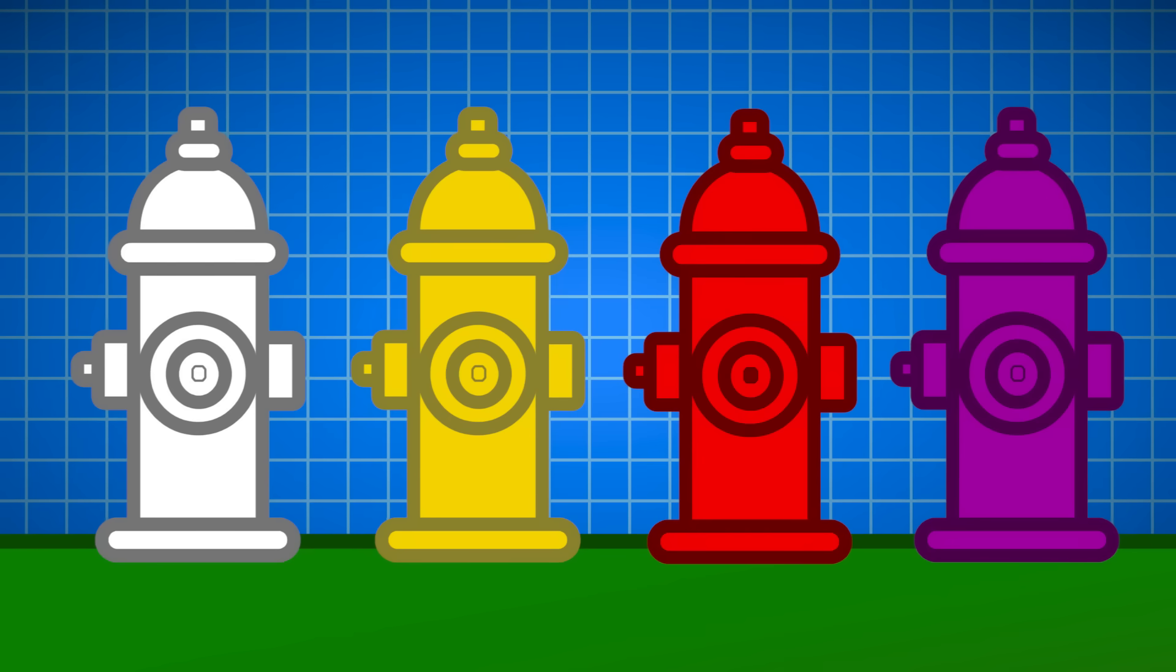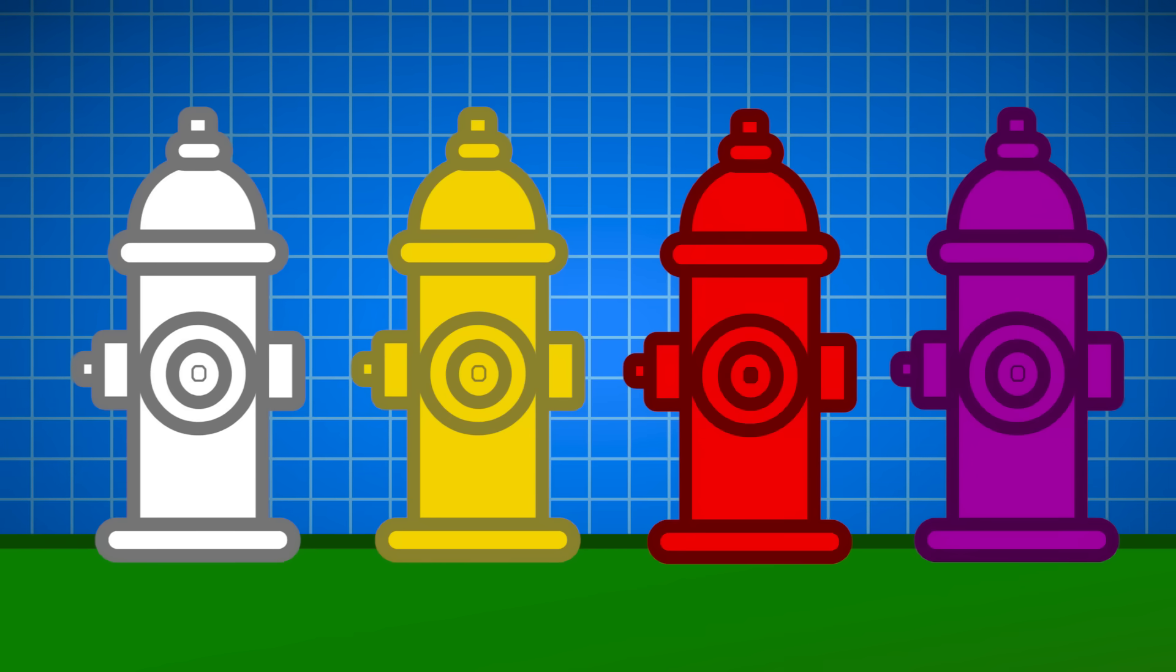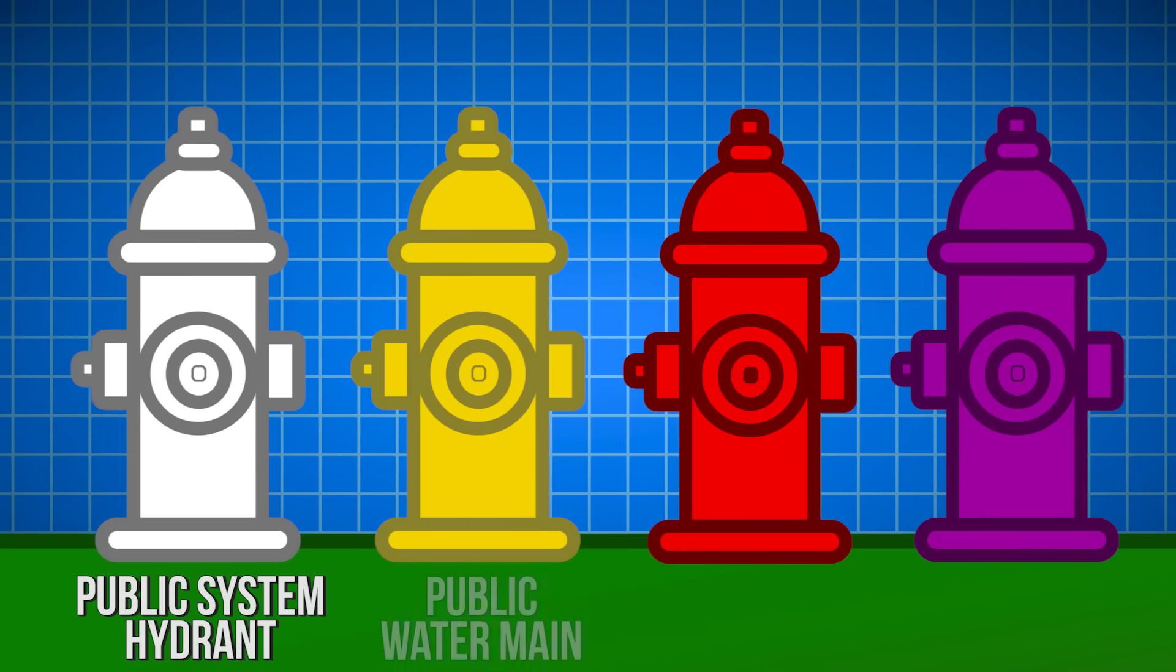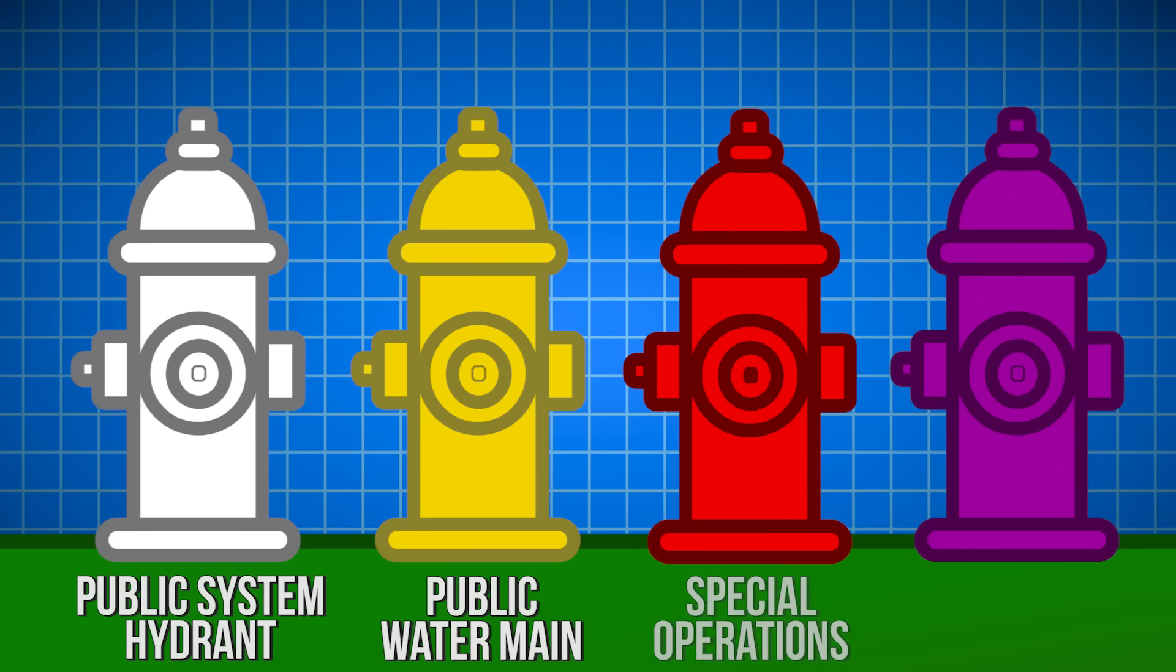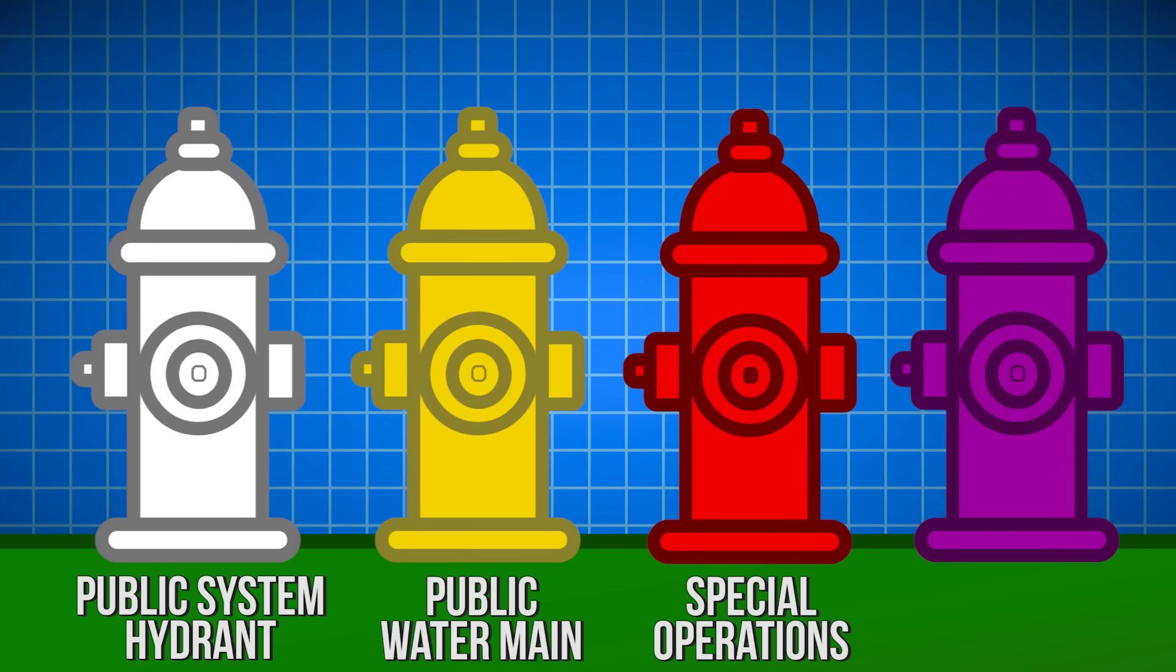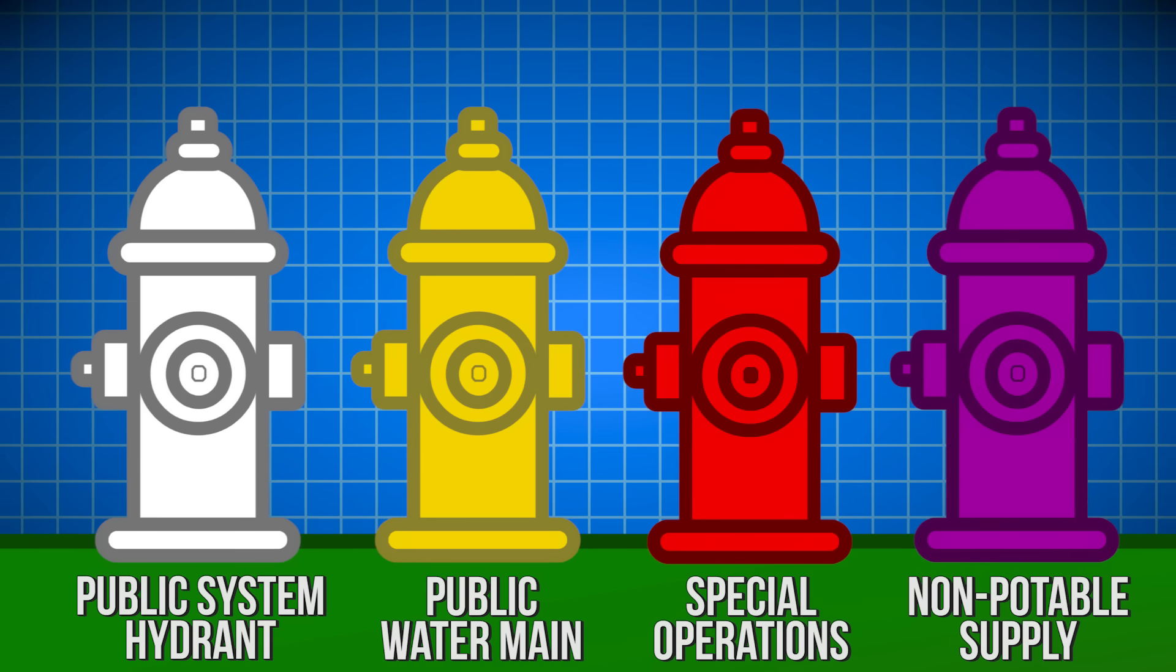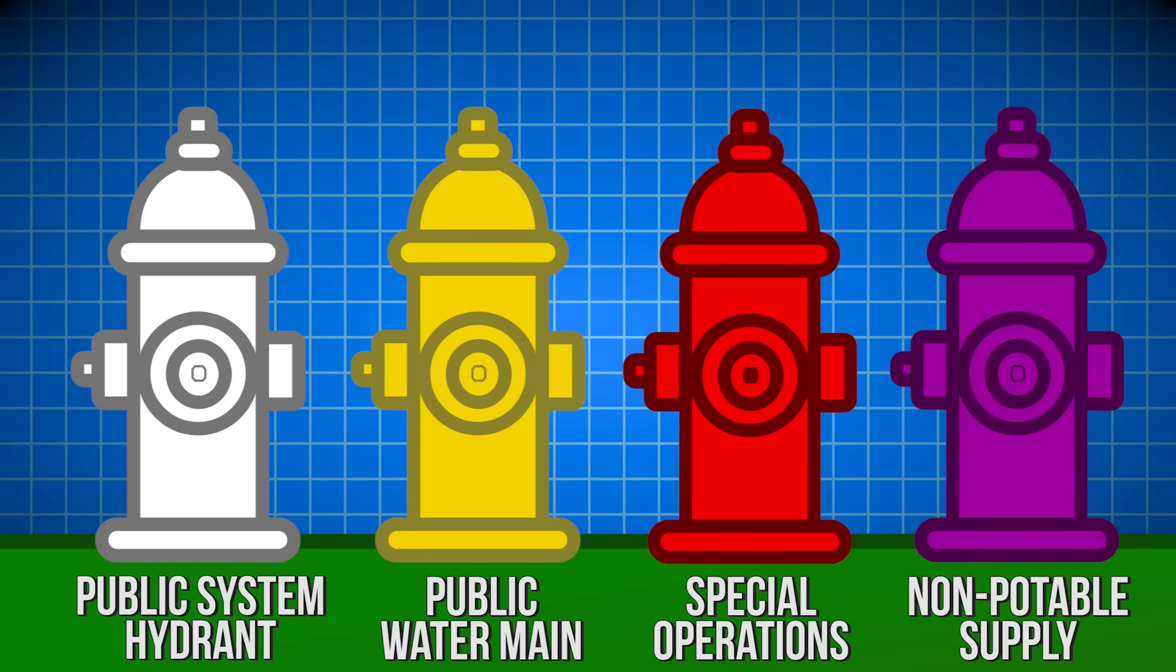In the US, the colors of hydrants can also indicate their type. White means public system hydrant, yellow means it's connected to a public water main, red means it's for use in special operations and not for other use, and violet means non-potable supply, or water from an untreated source like a lake.